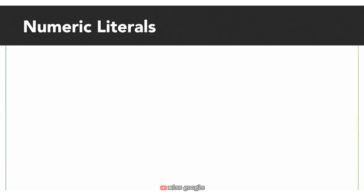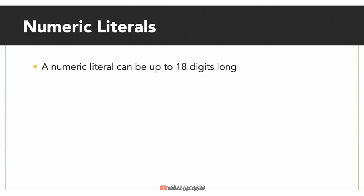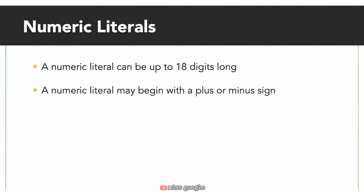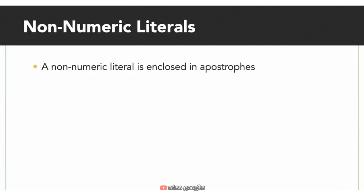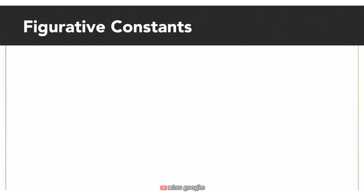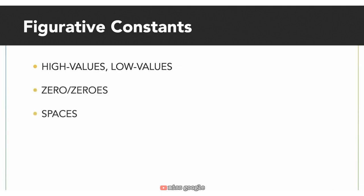In COBOL, we can have both numeric and non-numeric literals, where a literal is an exact value or a constant. Numeric literals can be up to 18 digits long, can begin with a leading plus or minus sign, and can contain a decimal point but may not end with a decimal point. A non-numeric literal is enclosed in apostrophes or quotation marks, may contain anything including spaces, numbers, and even reserved words, but cannot contain another apostrophe. COBOL also has figurative constants — reserved words that name and refer to specific constant values — including HIGH-VALUES, LOW-VALUES, ZERO/ZEROS, SPACE/SPACES, and QUOTES.